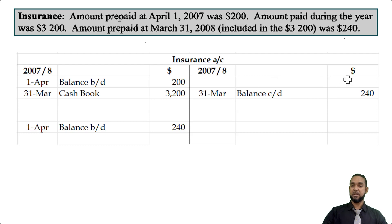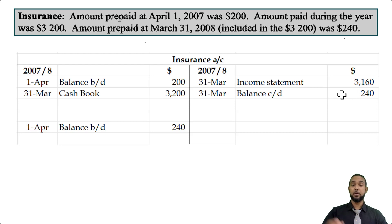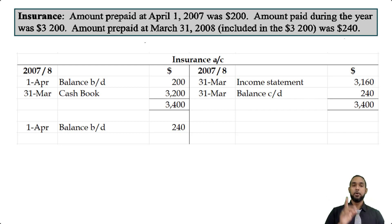We're missing a figure to help the account balance — that's the income statement figure. You add up the items on the debit side and subtract the item on the credit side. That gives you the insurance expense incurred. Totaling up both sides gives us the same total of $3,400.